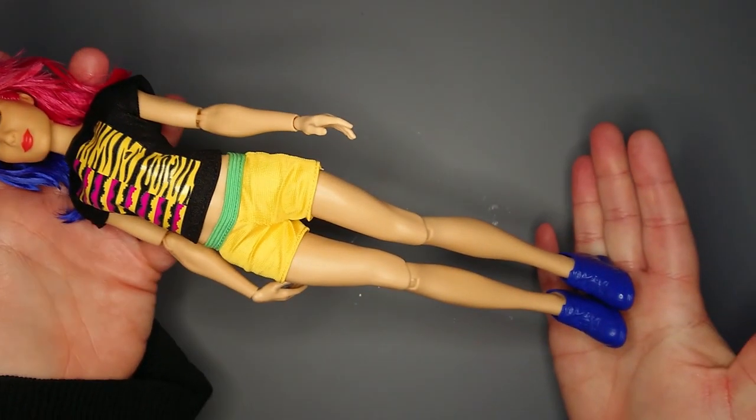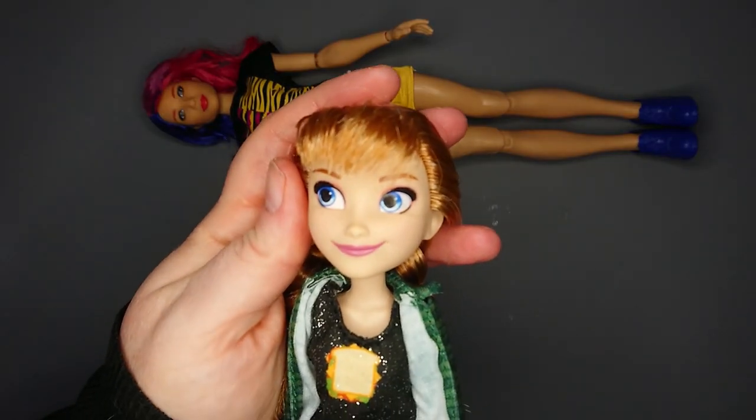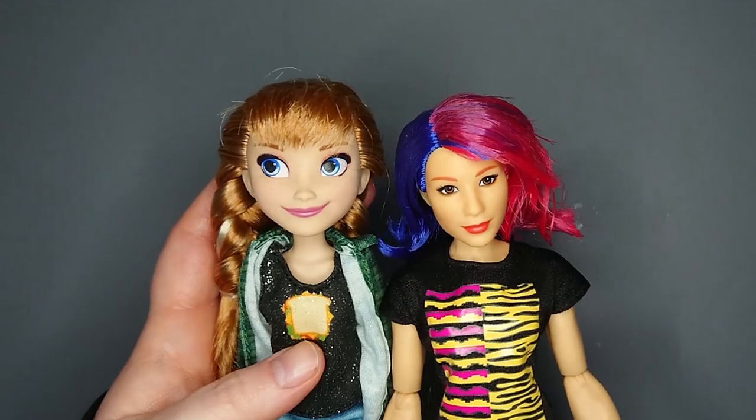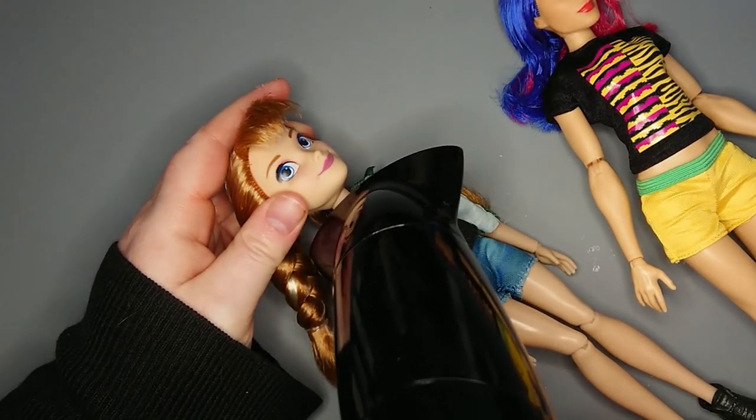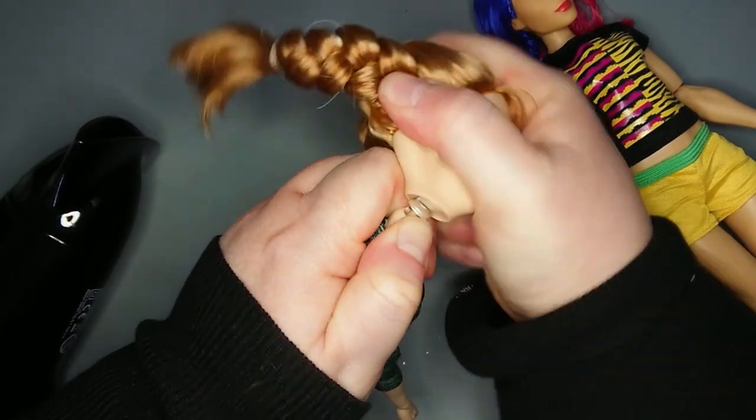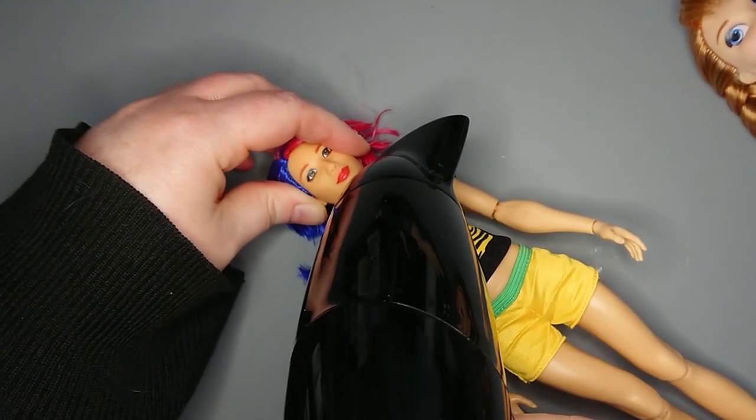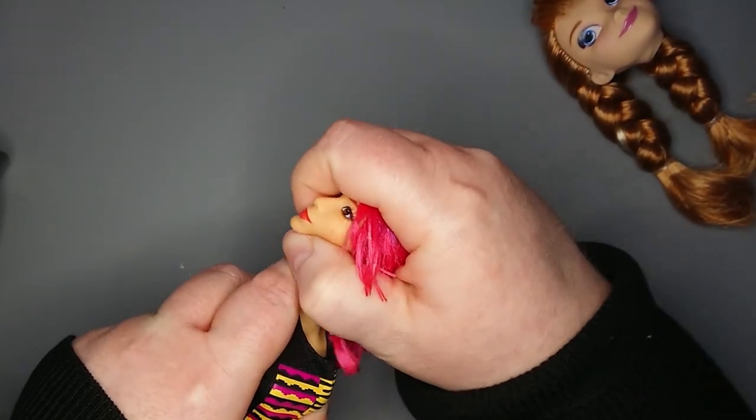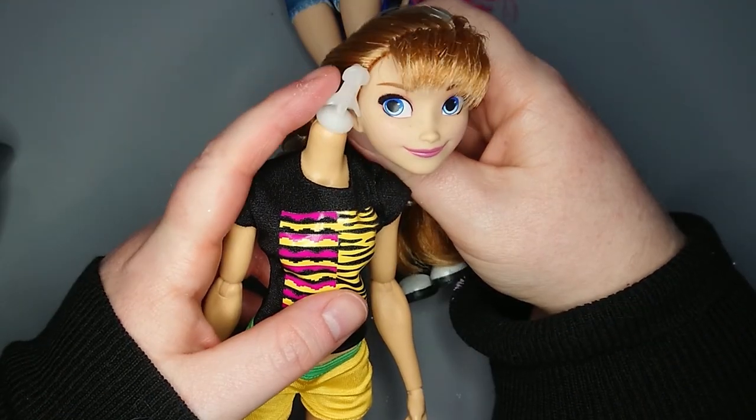I'll be using the body of this WWE superstar Asuka and the head of this Wreck-It Ralph 2 Anna. I think they'll make a great combo. I remove each of their heads by heating the vinyl with my hair dryer until it's squishy, and then gently remove it, taking care not to damage the neck peg. So here's what I'll be working with.